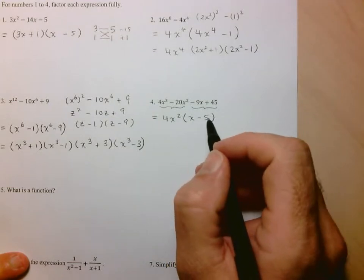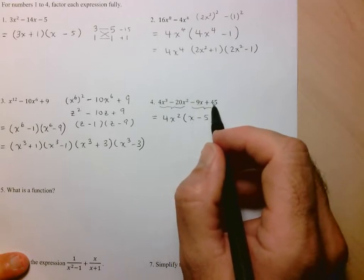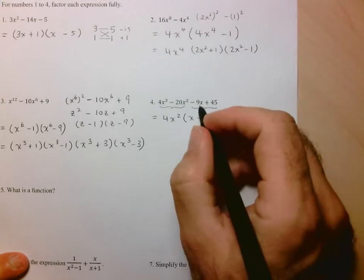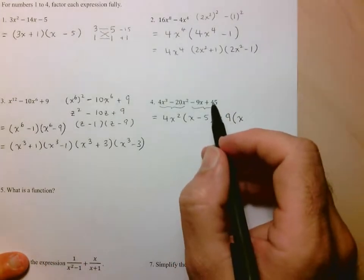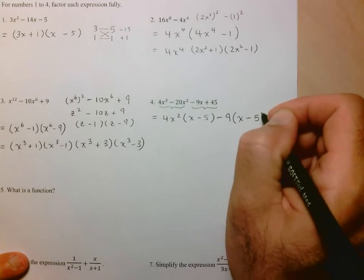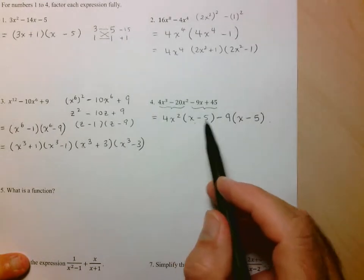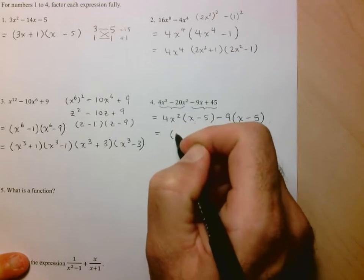Now, in order for grouping to work, I need to recreate this x minus 5 in the next two terms. So let's see if it works here. So we need an x minus 5. Here, the coefficient is negative 9x. 45 is also divisible by 9. But I'm going to factor out a negative 9, so that my resultant in the bracket is going to be a positive x. So here that gives me x. And here, 45 divided by negative 9 is negative 5.